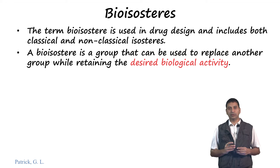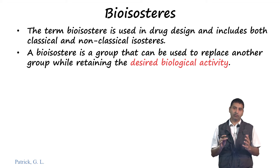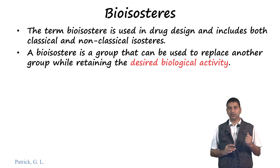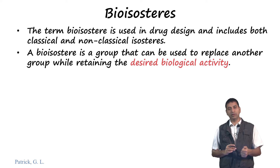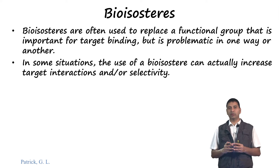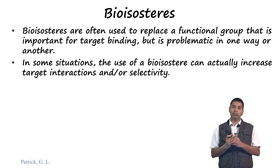In addition, there is the concept of bioisosteers. The term bioisosteer is commonly used in drug design and is a superset of both classical and non-classical isosteers. In drug discovery, a bioisosteer is a group that can be used to replace another group while retaining the same biological activity. That means if you replace a functional group, the activity does not change or it can improve. Bioisosteers are often used to replace functional groups important for binding where those groups have metabolic problems. The use of a bioisosteer can increase drug-target interactions and may also help with increased selectivity.